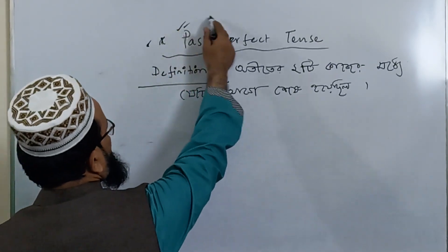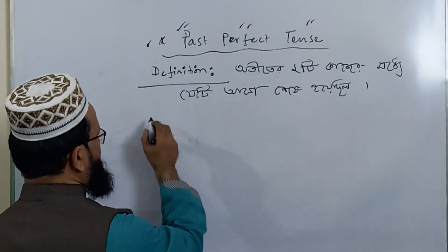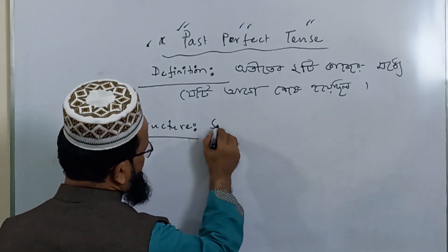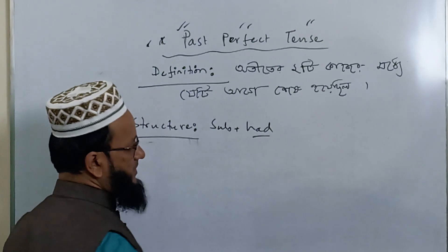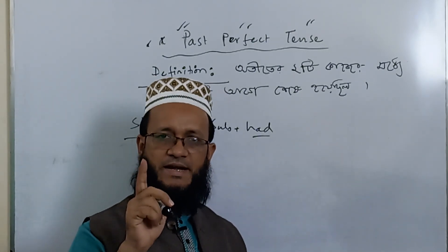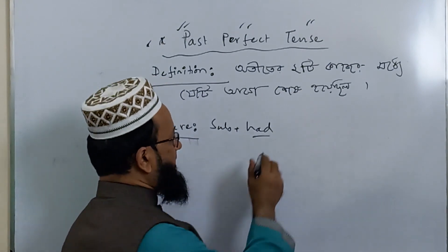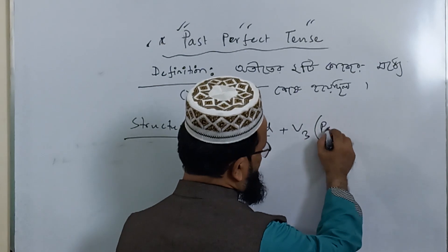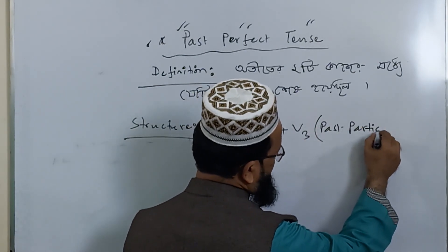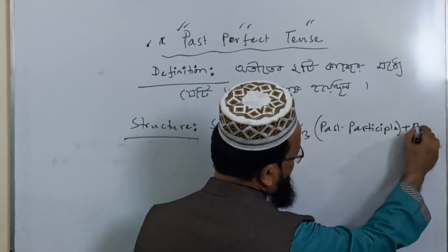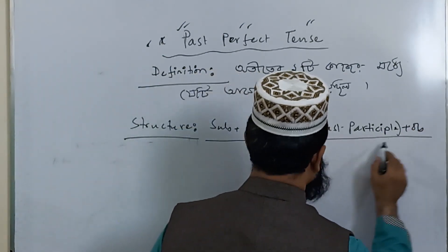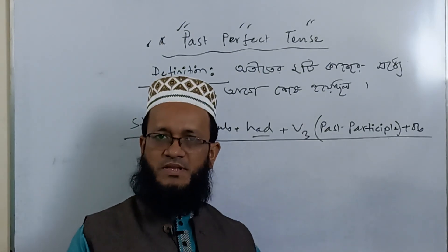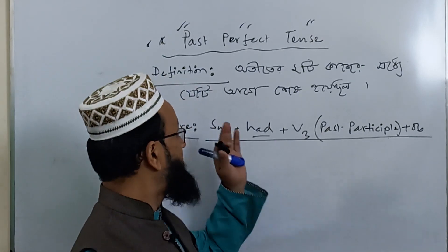Now let's do the structure of the past perfect tense. The structure is: subject, then 'had', then V3 — the past participle form. We will follow this structure and use it to define the past perfect tense.